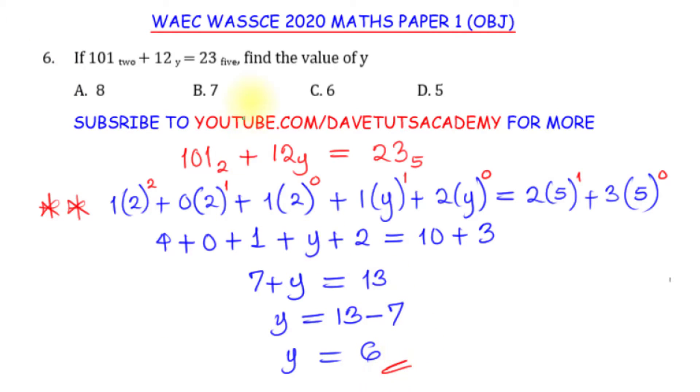So for this particular question, y is 6, so option C is the correct answer, 6 is the value of y for this question.